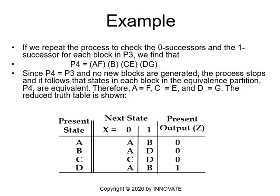We repeat the process to check successors for each block in P3. We find that P4 = {A, F}, {B}, {C, E}, {D, G} — unchanged. Since P4 = P3, no new blocks are generated and the process stops. The final equivalence partition tells us: A is equivalent to F, C is equivalent to E, and D is equivalent to G.